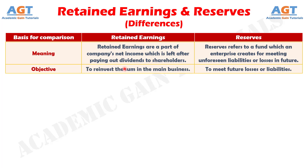Difference No. 2: The aim of keeping money aside as retained earnings is to reinvest the sum in the main business to obtain lucrative returns. Also, it improves the financial performance of the firm. As against, reserves aim to meet future contingencies, losses and liabilities.